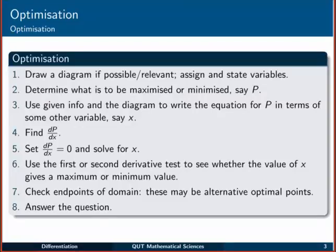Here's an eight-step process that we can apply when we're trying to find extrema of real-world functions, optimized problems. The first step says to draw a diagram if relevant or if possible. It won't always be possible and it won't always make sense, but if you can, sometimes it helps you in the second part of this step, which is to assign and state the variables that are in your problem.